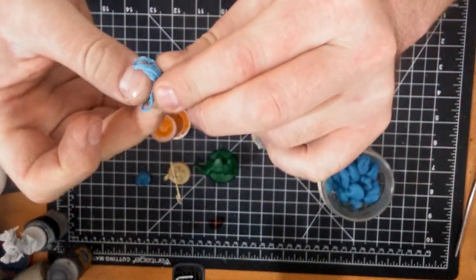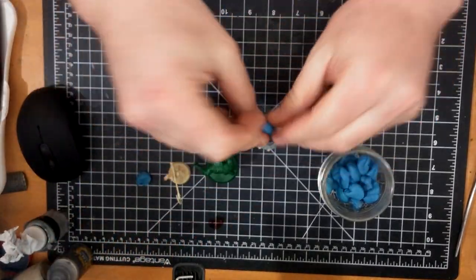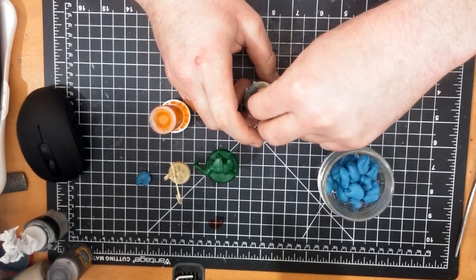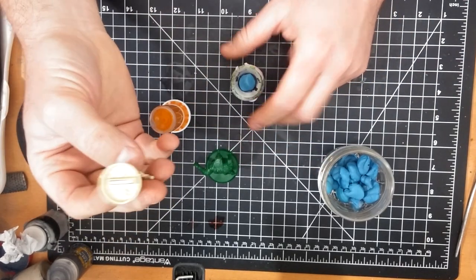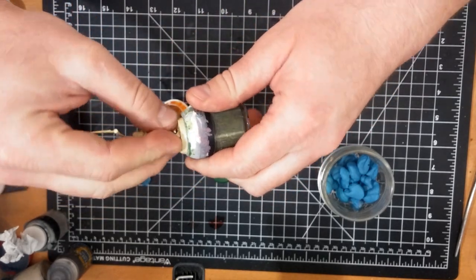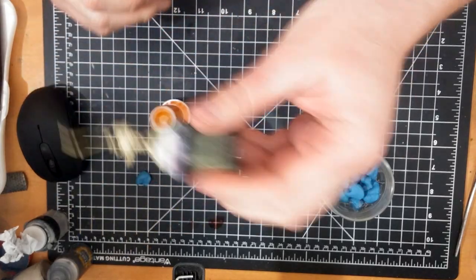I usually make a little gumdrop kind of shape. With a model like this that has a nice textured bottom base, it'll stick no problem. You can slide it around and it stays on.